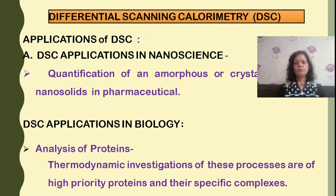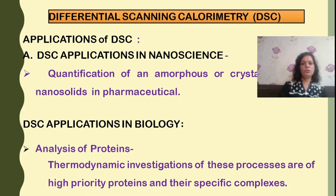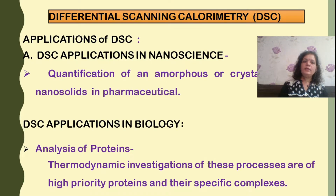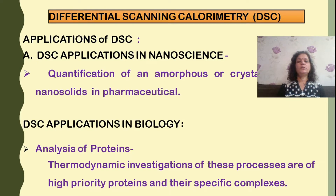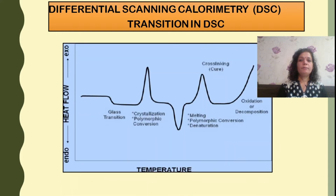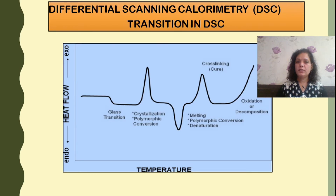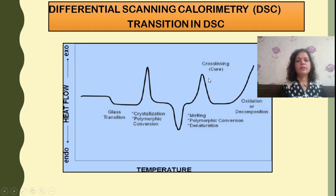Looking at the application part of DSC, it is applied for nanoscience where crystalline or amorphous phases of nanosolids — utilized routinely in pharmaceuticals — can be quantified. DSC can also be utilized for analysis of proteins in biology, where thermodynamic investigation of various types of proteins with high priority and specific complexes can be carried out simply by utilizing DSC. When interpreting the data from DSC, various transitions like glass transition, crystallization, polymorphic changes, convergence, melting, polymorphic convergence, and denaturation — as well as cross-linking, oxidation, or decomposition — can all be identified.